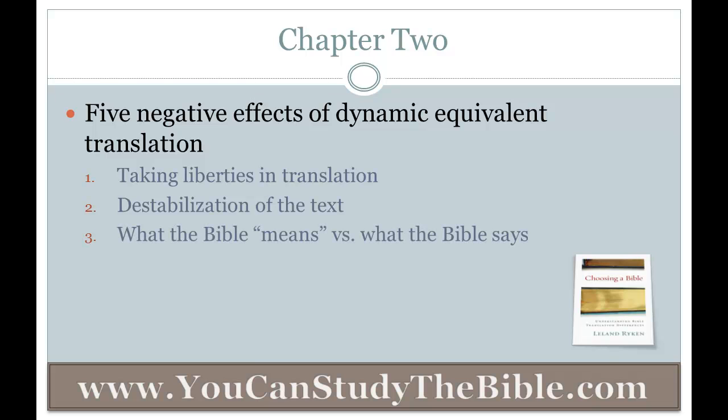The third argument concerns what the Bible means versus what the Bible says. The author suggests that dynamic equivalent translations make it impossible to know what the Bible means because they remove from sight what the Bible says. For example, if a translation places a particular interpretation in the text rather than simply translating the words, the reader of that Bible has no option left to find a different interpretation of the text.